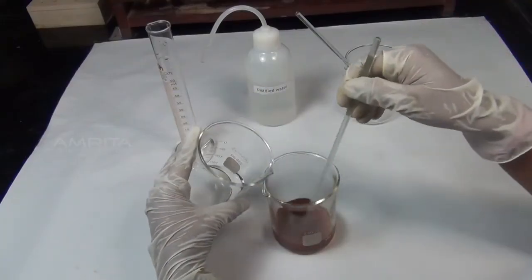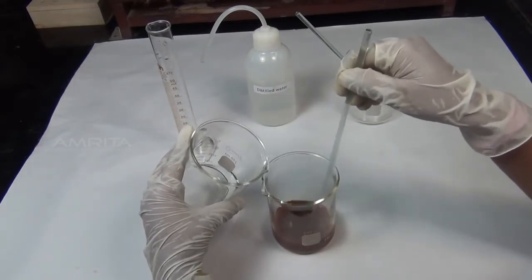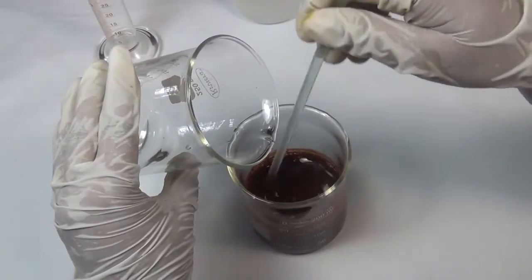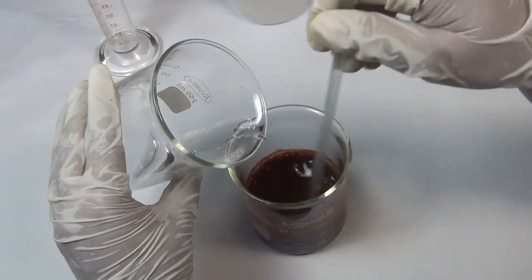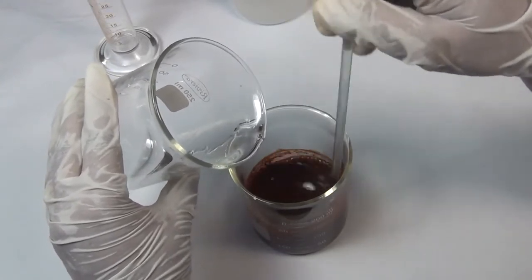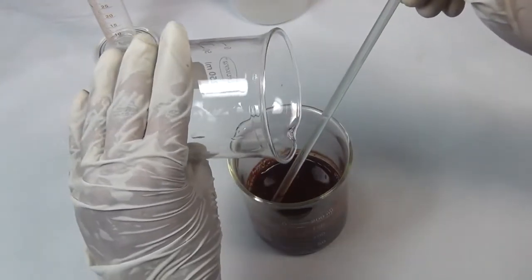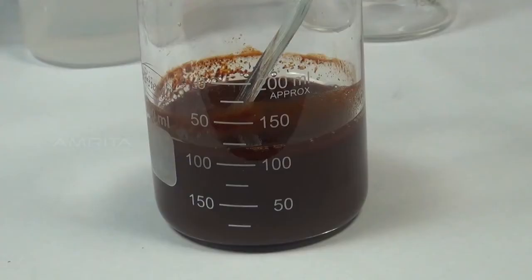Add potassium hydroxide solution to ferric chloride solution in small proportions with constant stirring using a glass rod. Ferric chloride reacts with potassium hydroxide to form a brown precipitate of ferric hydroxide.